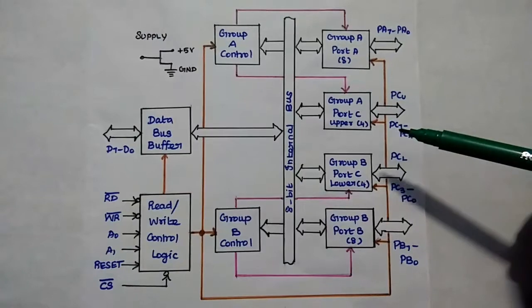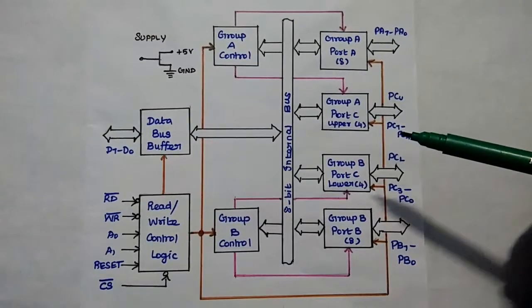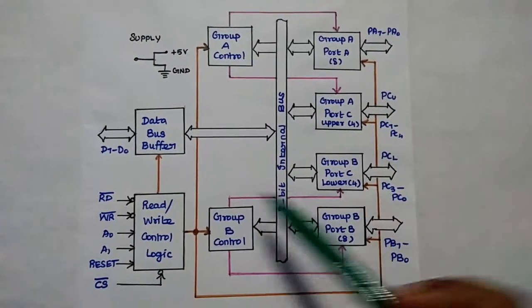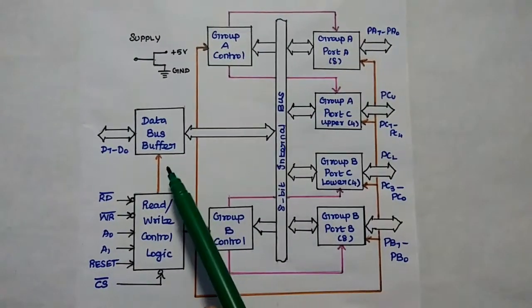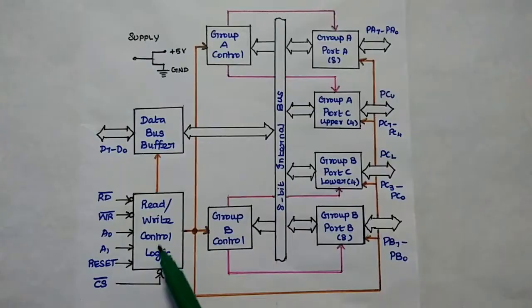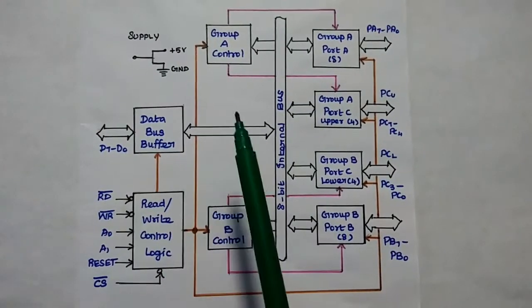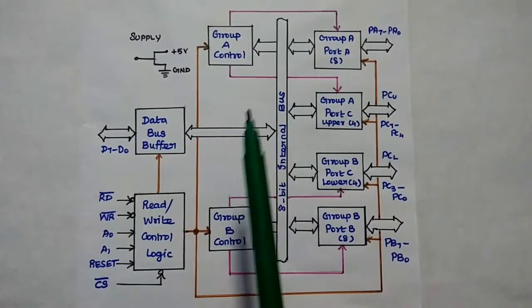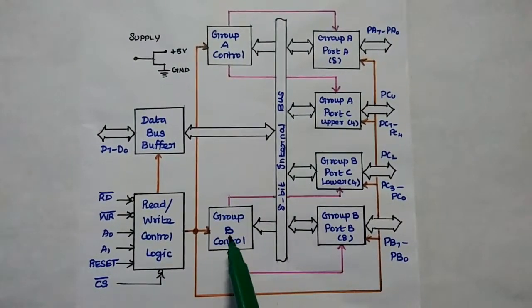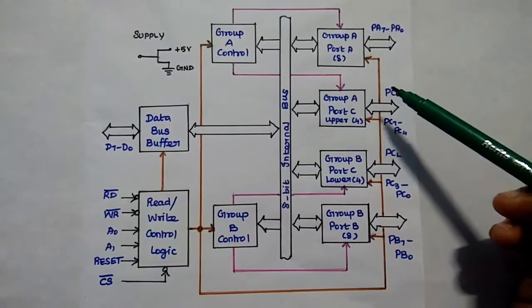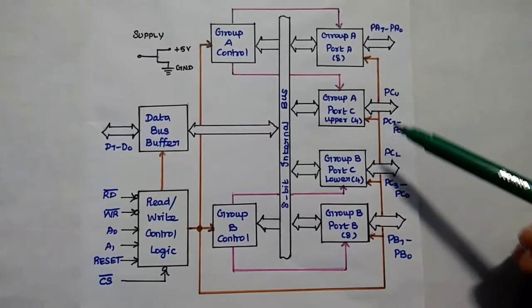This is the architecture of 8255A. It has important functional units: Data Bus Buffer, Read/Write Control Logic unit, Group A Control, Group B Control, and three input/output ports.